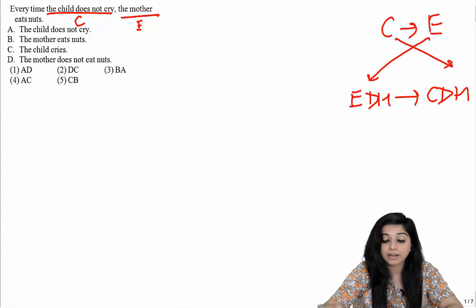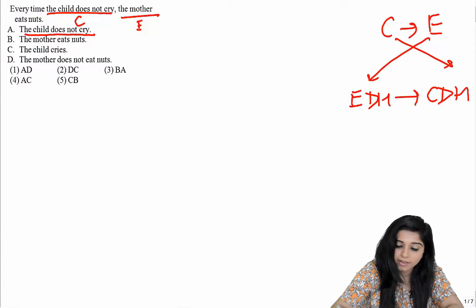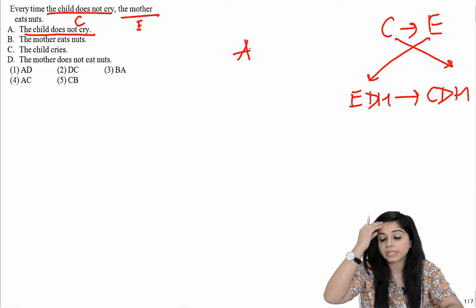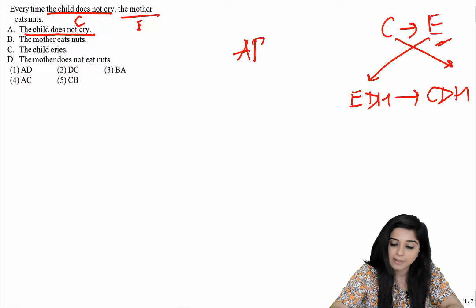Find where is the child not crying? A. One of the possible answer choices begins with A. Let's see where is the effect happening - the mother eating nuts. Mother eating nuts B, therefore AB is one possible answer choice.